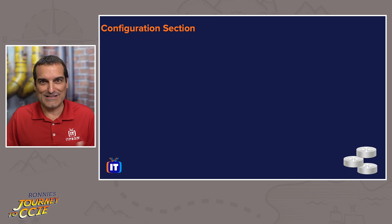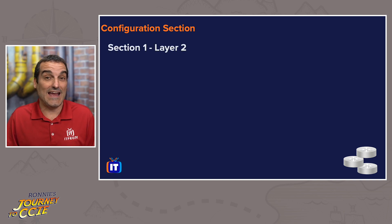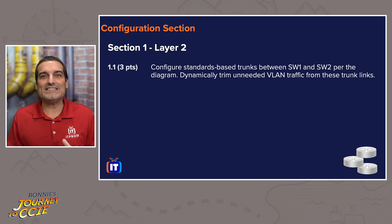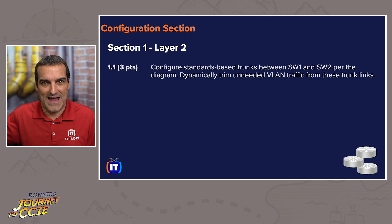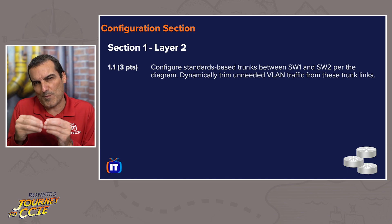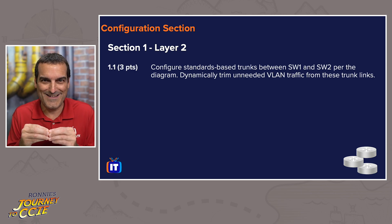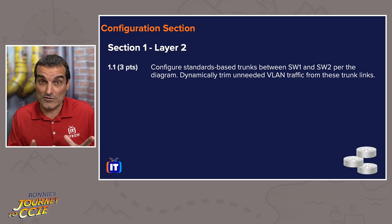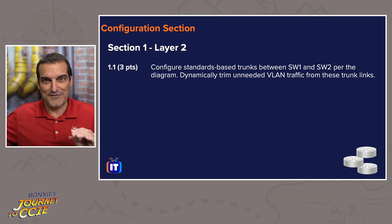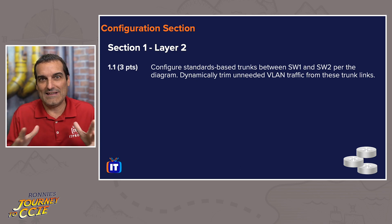In our configuration section, the first area is called Layer 2. The first task is to build standard-based trunk links and to dynamically trim unneeded VLAN traffic from these trunks. This is a core task — I have to do this because so many points depend on these trunks being built correctly. Notice there is a non-core component here: the VTP pruning part of task 1.1. If I struggled with VTP pruning, I could skip that but make a note on my skip task tracker. That's how you approach a single task as having both a core component and a non-core component.